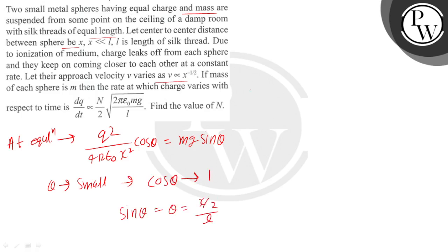So at the same time, it will be equal to x/(2L). So if we go to the equation, then Q²/(4πε₀x²) is equal to mgx/(2L).